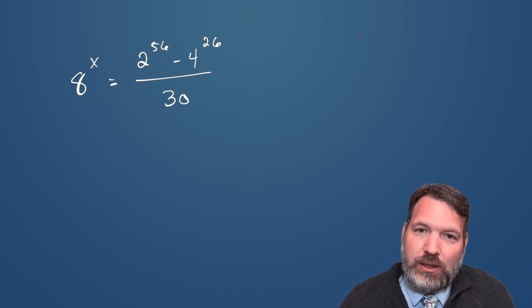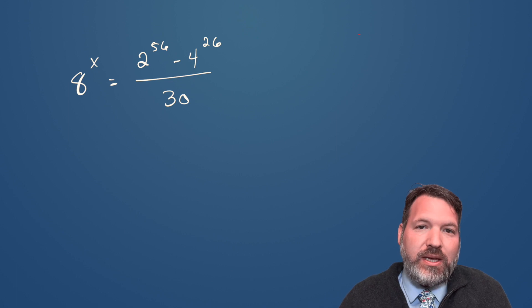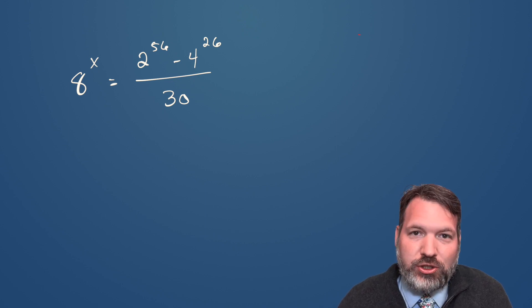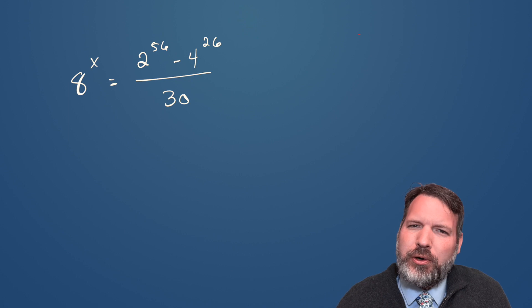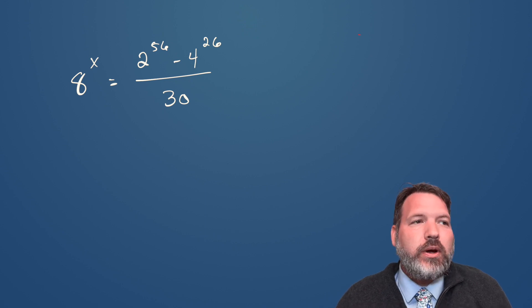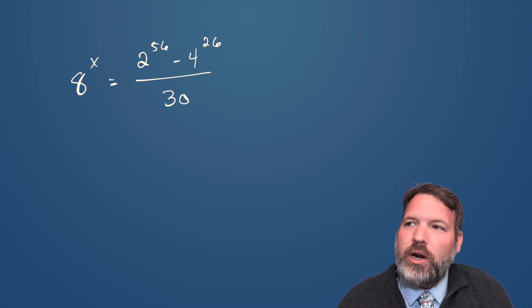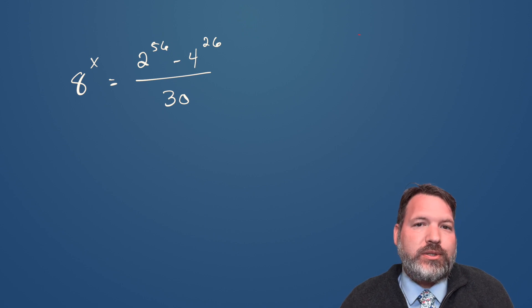That should be surprising because clearly 2, 4, and 8, the bases of our different exponential expressions, are related to each other. But what on earth is 30 doing in this problem? This is a great example of a problem where we really want to understand our power rules to be able to manipulate it.